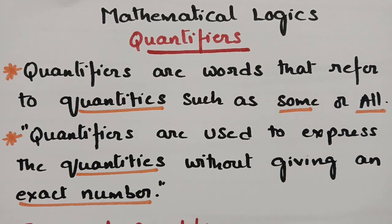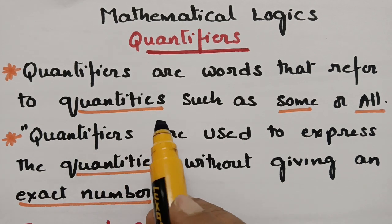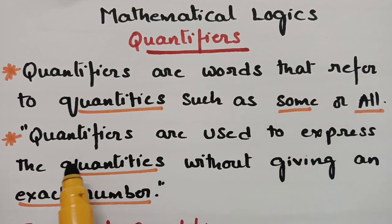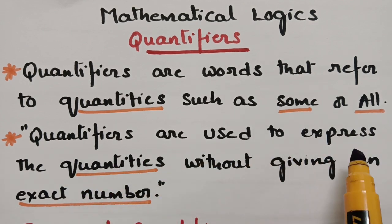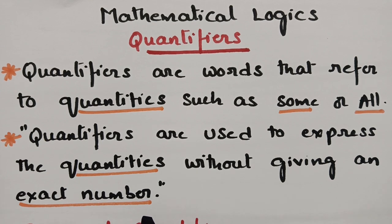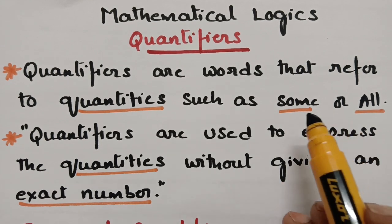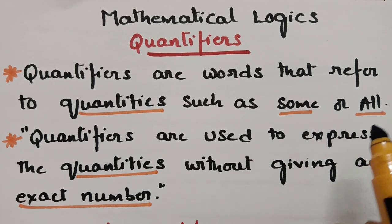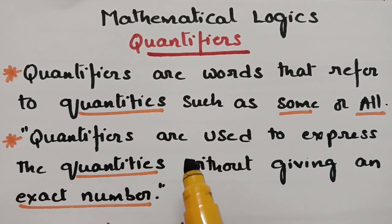So what is a quantifier? Quantifiers are words that refer to quantities such as 'some' or 'all'. Quantifiers are used to express quantities without any exact number — there is no exact number here. We can say 'some students' or 'all the students' but there is no specific number. Those are called quantifiers.